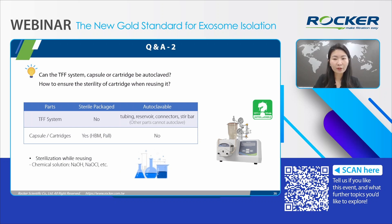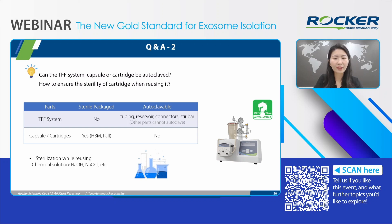The second question is: can the Tenfield system or a cartridge be autoclaved, and how to ensure sterility of the cartridge when reusing it? This is a really good question. TFF capsules from Pall and Repligen Biomet come in sterile packaging, but Tenfield itself is not sterile. Since the capsules and cartridges are not autoclavable, chemical sterilization is recommended. We can use a cleaning solution like sodium hydroxide to sterilize the wetted parts, followed by thorough rinsing with pure water. After this process, the system is ready for the next run.